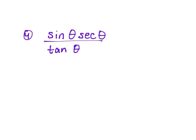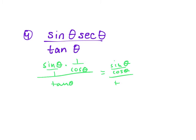Number 4: we have sine times secant over tangent. Change everything to sine and cosine. This becomes sine θ times 1 over cosine θ on top. Sine over cosine is tangent, so the top simplifies to tangent θ. Tangent over tangent cancels and becomes 1.